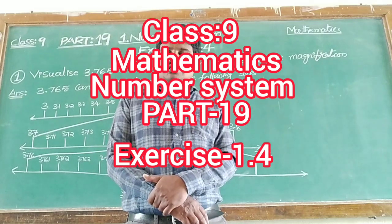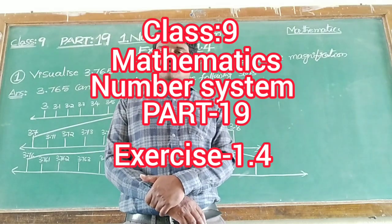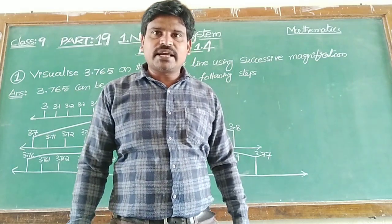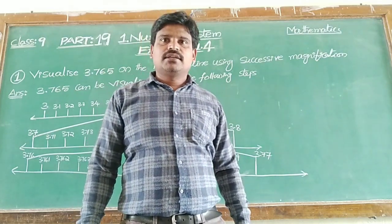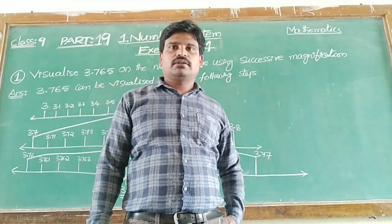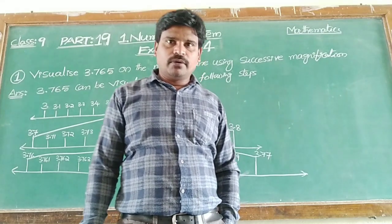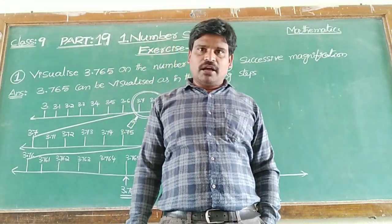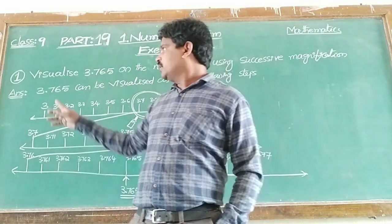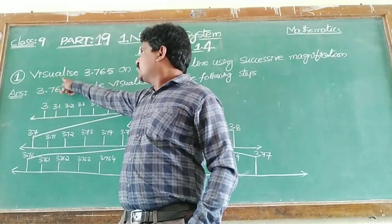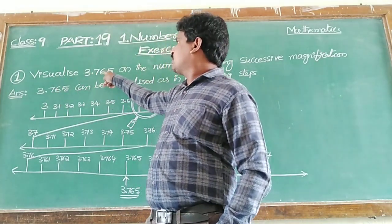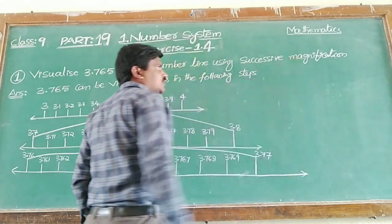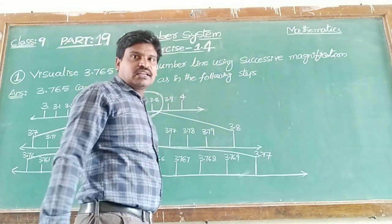Good morning students. Now we are going to do the problems of exercise 1.4. In exercise 1.4, we are going to do the first problem. What is given here? We have to visualize 3.765 on the number line using successive magnification.